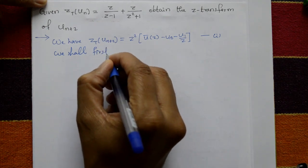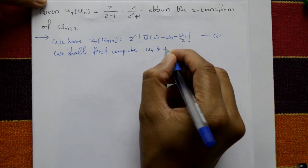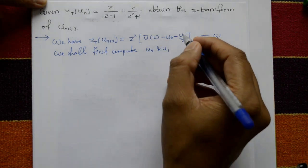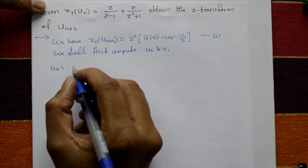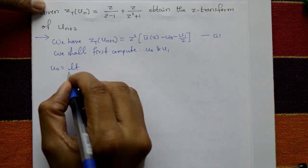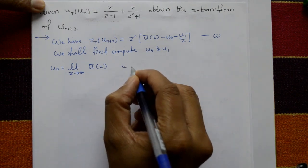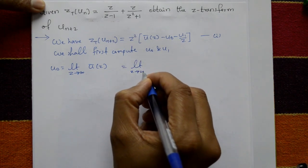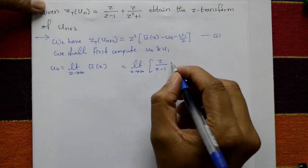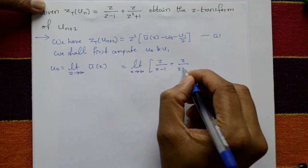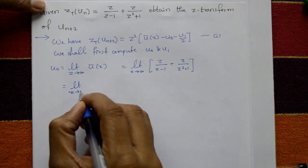We need to find u(0) and u(1), and substitute in equation number one. First, u(0): by the initial value theorem, u(0) is equal to limit z tends to infinity of Ū(z). Ū(z) is given as z/(z-1) plus z/(z²+1). So we evaluate limit z tends to infinity.